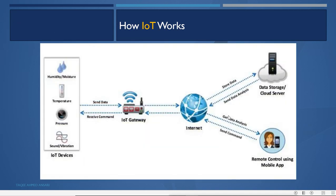Because IoT is on the internet, it can be accessed from anywhere. Devices such as sound, vibration, pressure, temperature, or humidity monitors send data to IoT gateways. From the gateways, the data is stored in cloud servers and users can access it remotely using a mobile app.